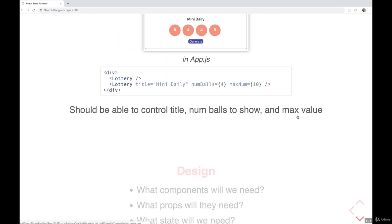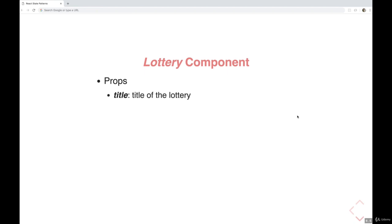Then the number of balls that it should display. So there's a default—we want it to display six if you don't specify it. But if you do specify, then you could say four or 10 or however many balls you want there to be in your lotto.